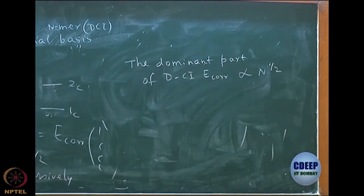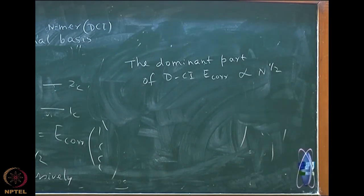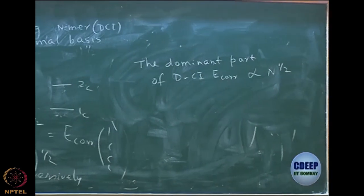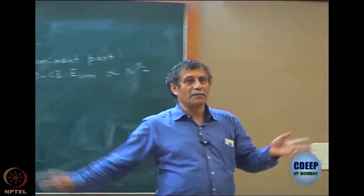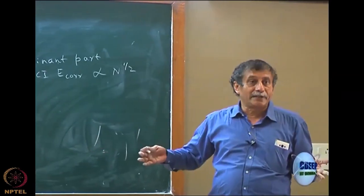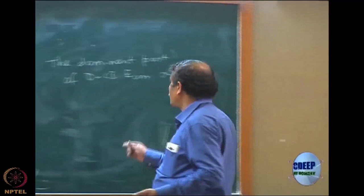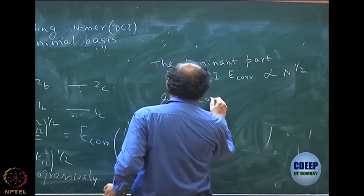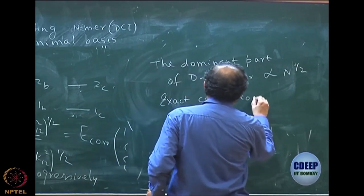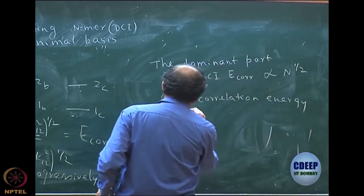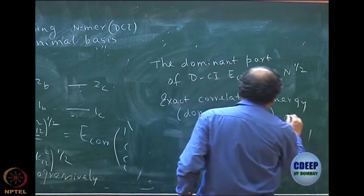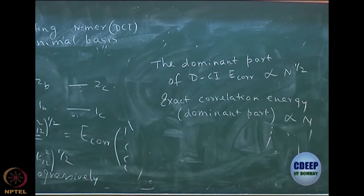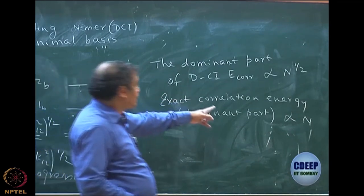In terms of n dependence, you can see that if I expand this, the first term will be n to the power half. The dominant part is actually n^(1/2), and this itself is wrong, obviously. That is the reason the problem comes up for the n-mer. It should have been actually proportional to n as you would expect. So in exact correlation energy, the dominant part is proportional to n.